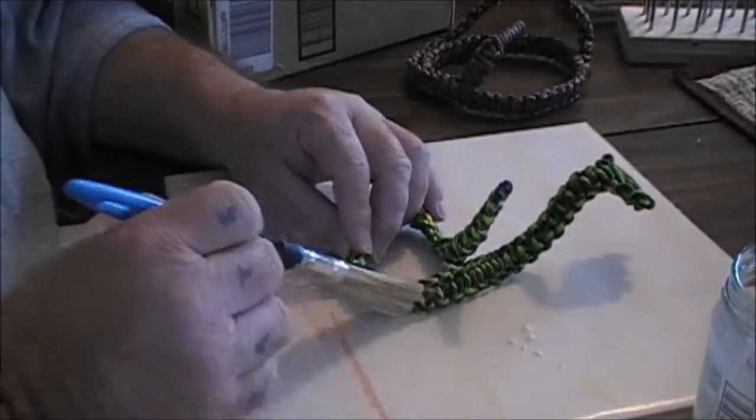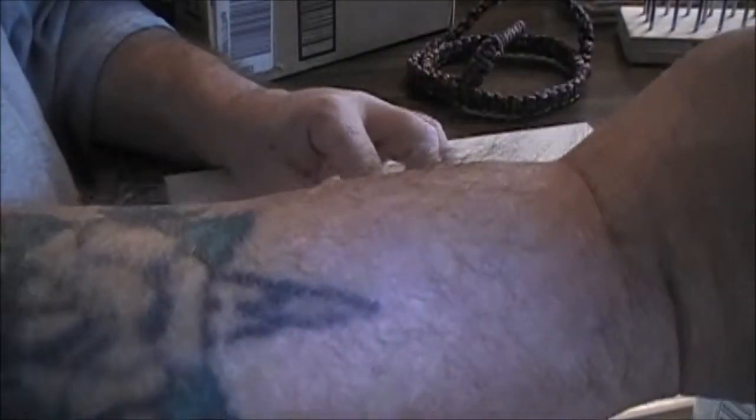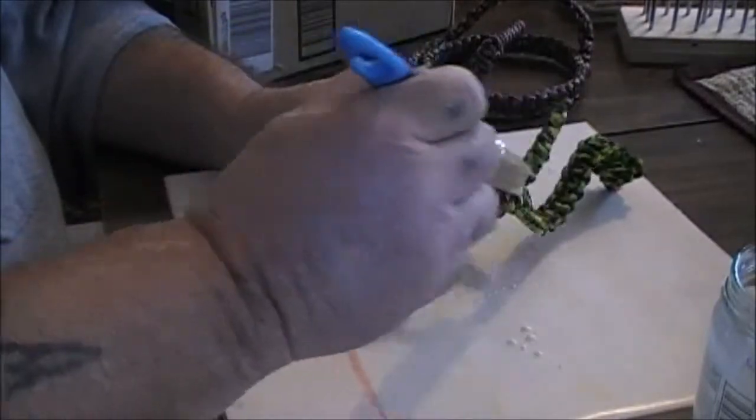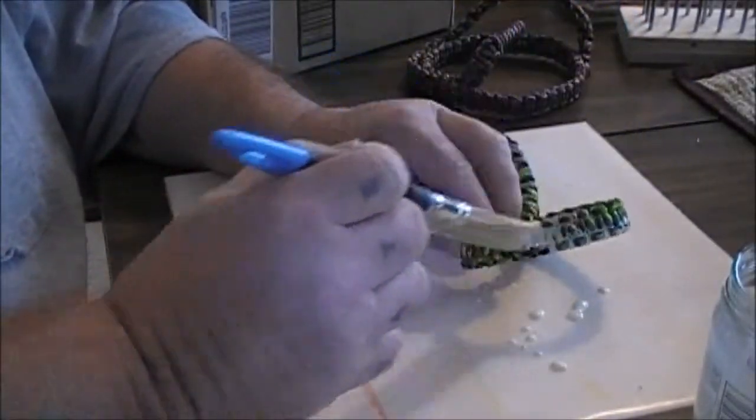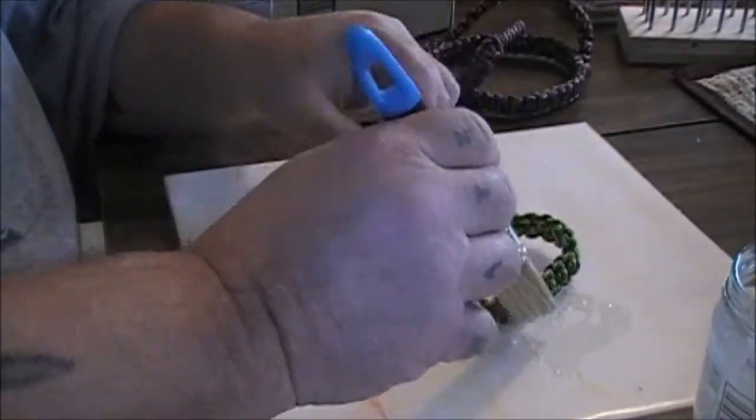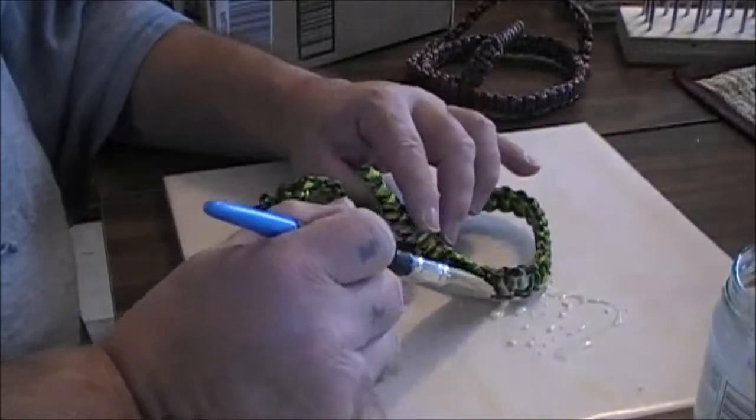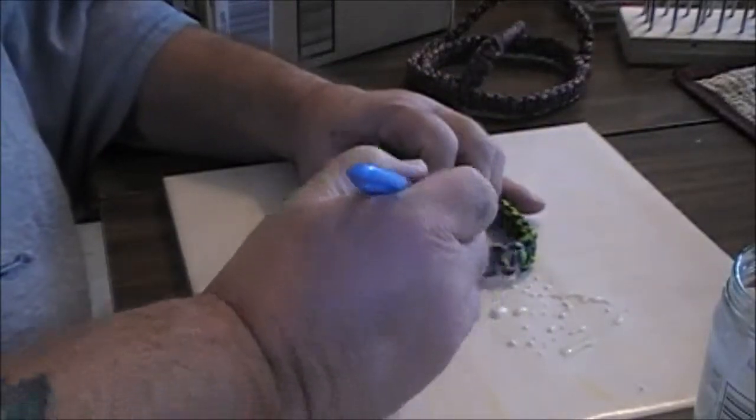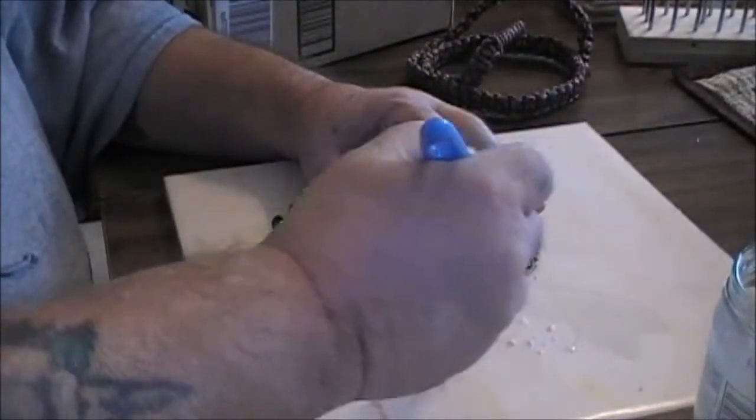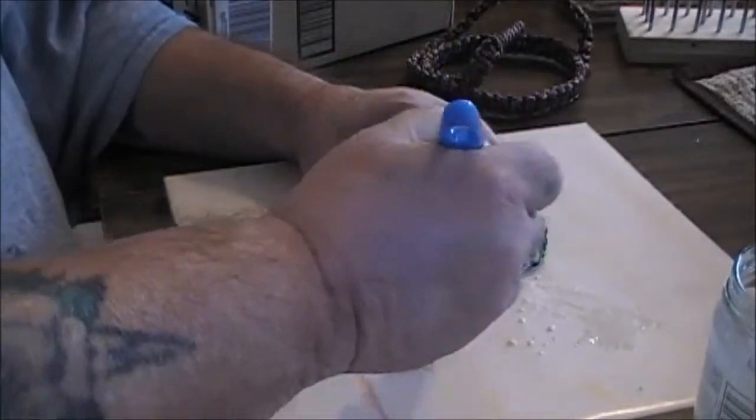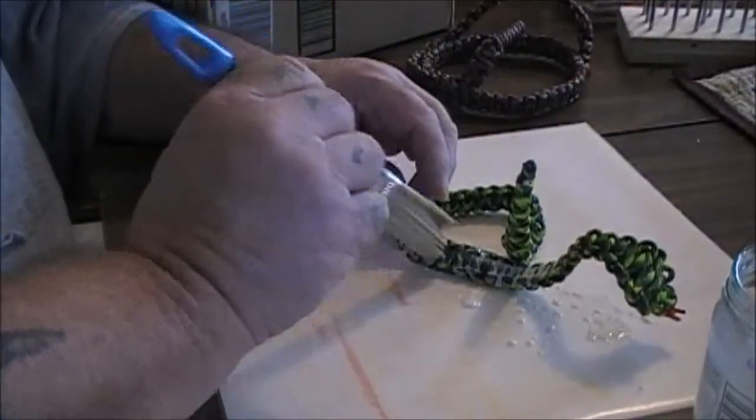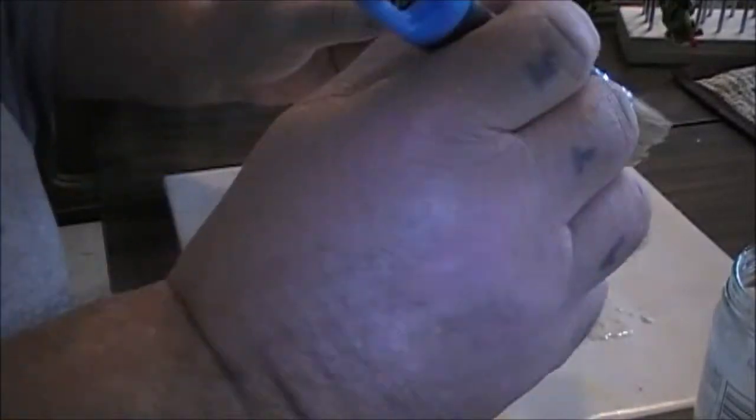Make sure to use wax paper, otherwise you'll get it all over your table. I got a board under here with wax paper on it. But all you do is soak it in this mixture. When it dries it's clear, you won't see it. The paracord sucks it up. You gotta do both sides.